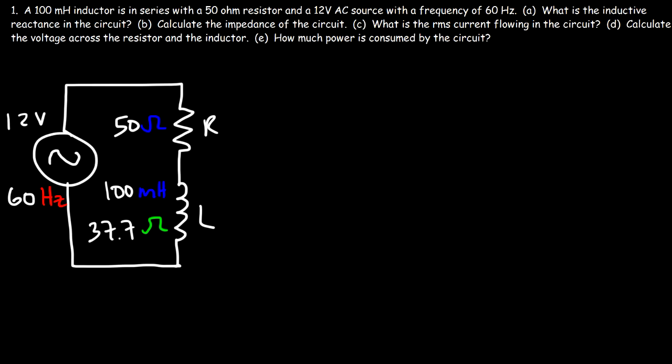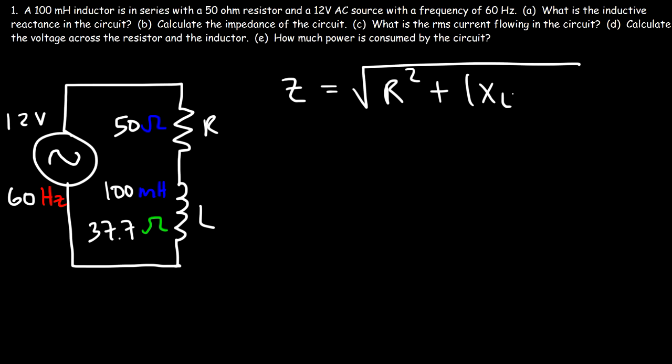Now let's move on to Part B: calculate the impedance of the circuit. The resistance, inductive reactance, and impedance all share the same unit — they're all measured in ohms — and they represent the opposition towards an AC signal in the circuit. The formula you need to calculate the impedance is: Z equals the square root of R squared plus (XL minus XC) squared.